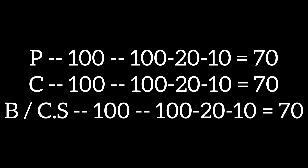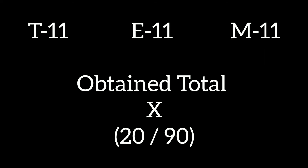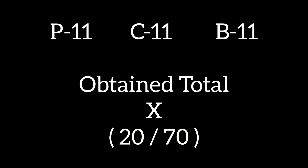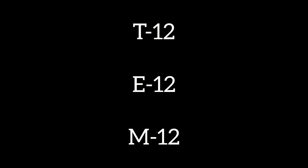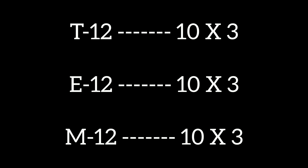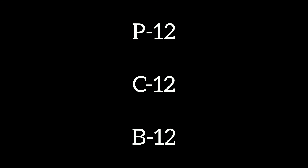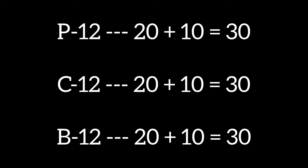So Tamil and English marks will be calculated as 20 out of 90. For Physics, Chemistry, Biology or Computer Science, it is 20 out of 70. For 12th standard — Tamil, English, Maths — only internal assessment marks count: 10 marks each for 3 subjects, giving 10 into 3 = 30. For Physics, Chemistry, Biology or Computer Science: 20 practical marks plus 10 internal assessment marks equals 30.